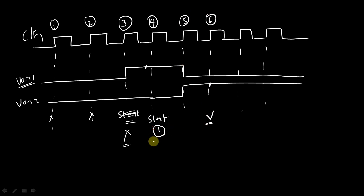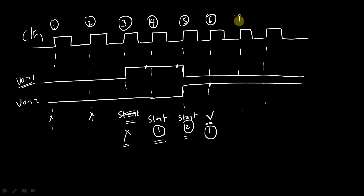The first checking which started at the fourth clock edge is going to get passed at the sixth clock edge. And if you observe carefully, at the fifth clock edge also, variable one was high. So here the second checking will start. Since the value of variable one was high, the second checking will start, and after two clock cycles — in the seventh clock cycle — it is going to check for the value of variable two. Here also it is high, so your assertion is going to get passed here. This is how you establish a timing relationship between multiple variables inside a sequence.